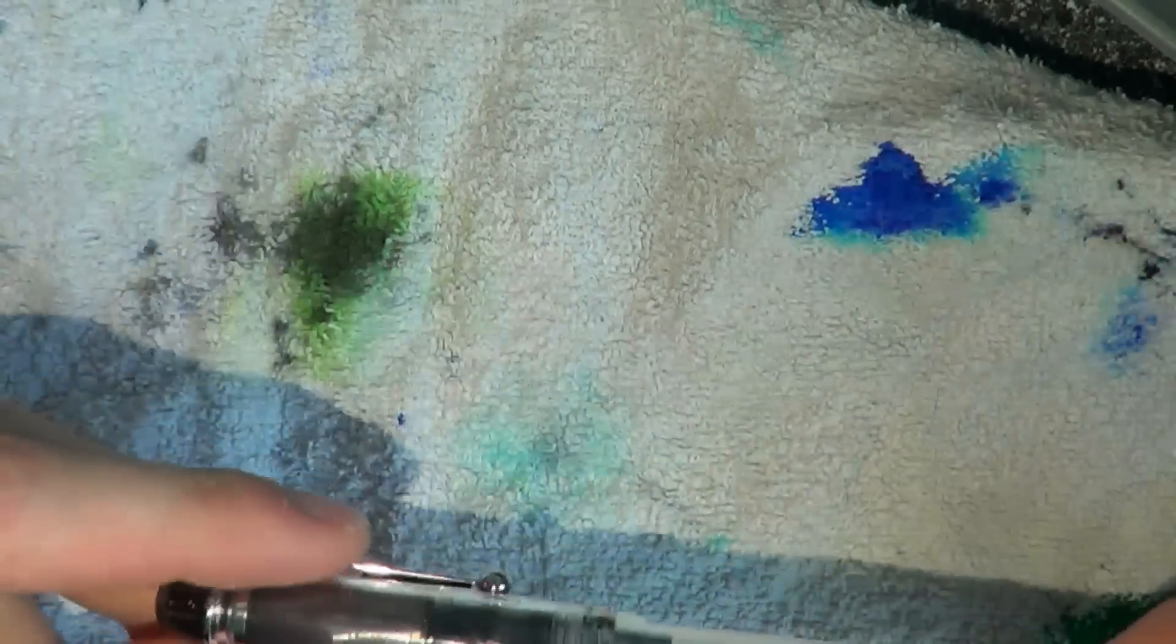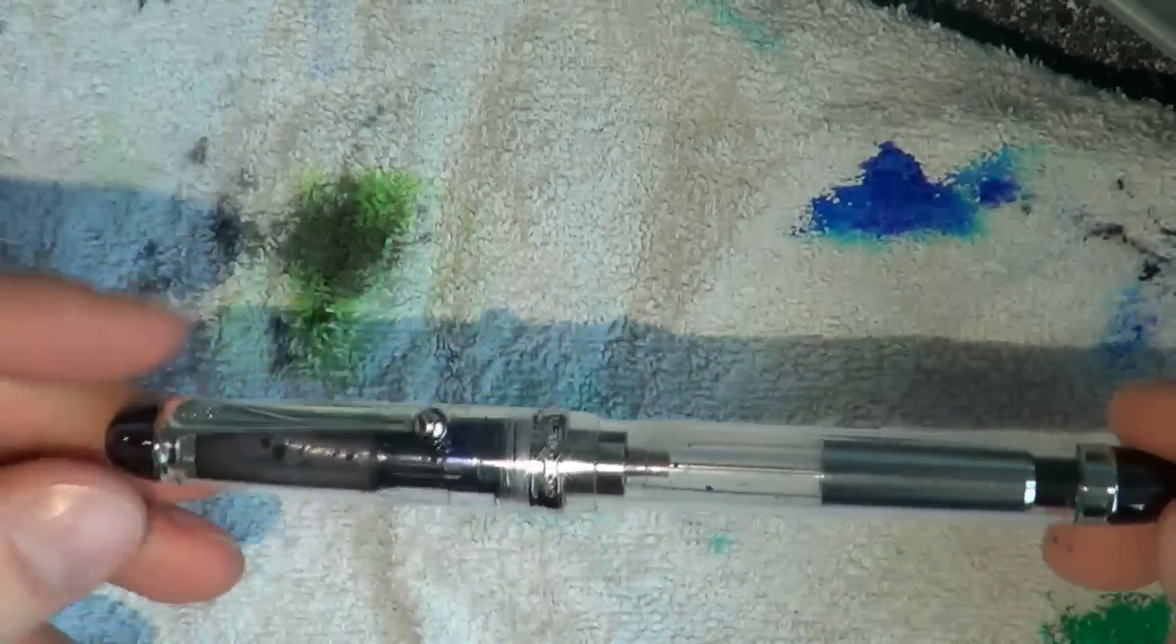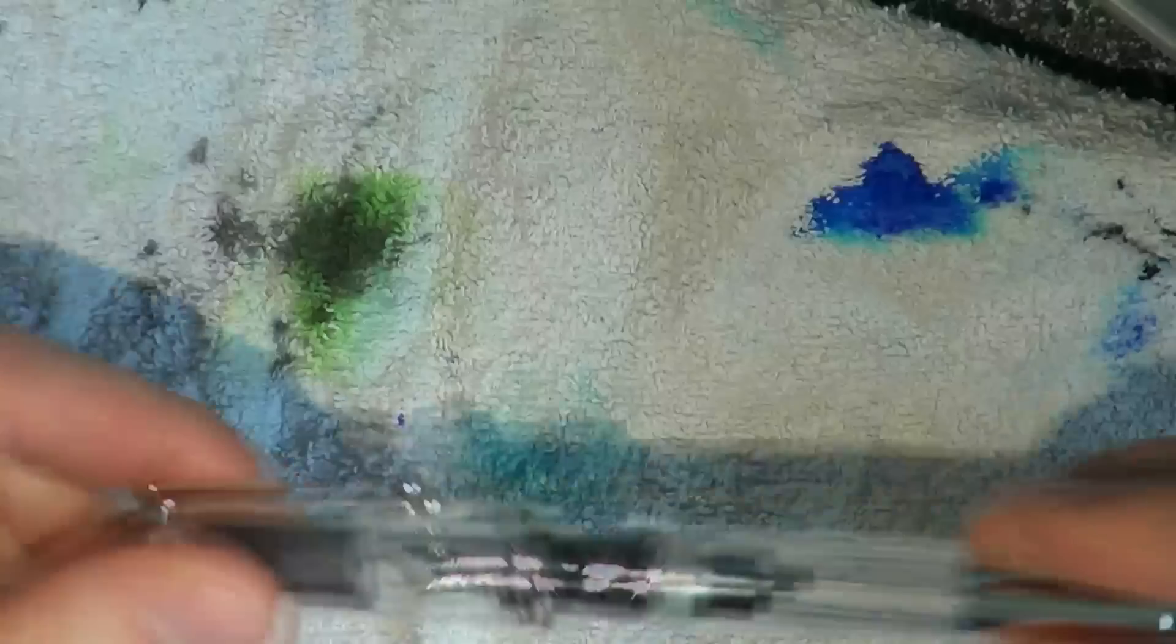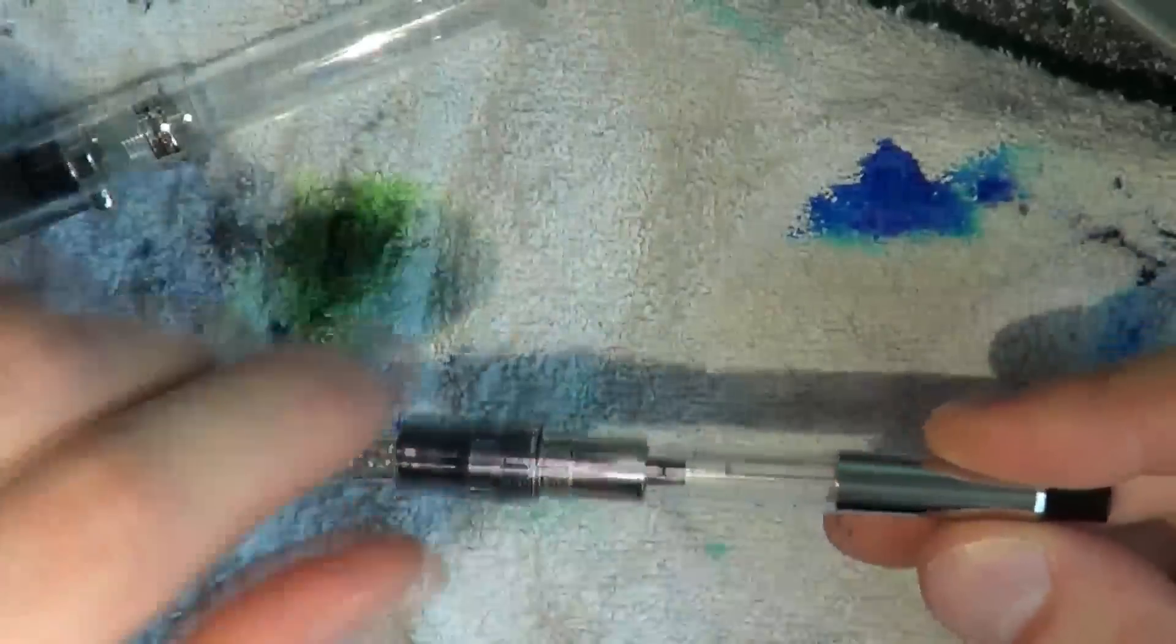Disassembly of a Pilot Custom 74 is fairly simple, although not as straightforward as with some pens. Unscrew the cap, then unscrew the barrel. Post the cap for easy storage. Now you remain with the section and the converter.